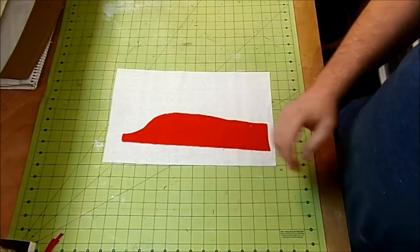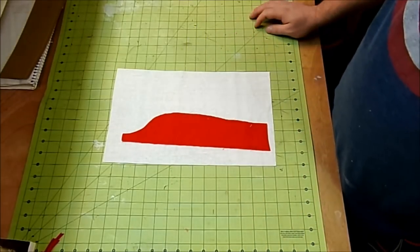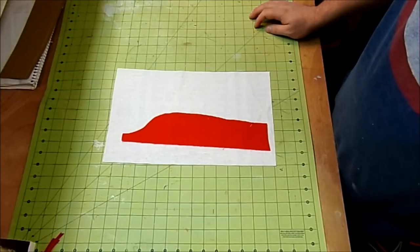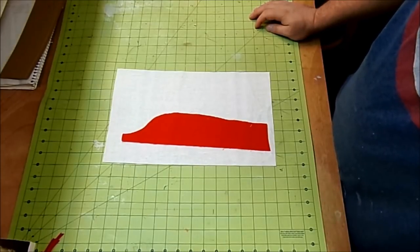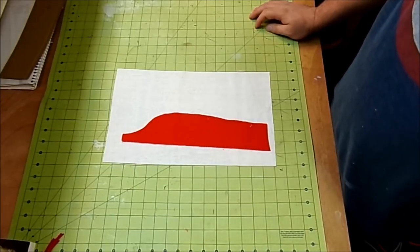Now I got this idea off of Pinterest—I believe it was on a website called Craftomaniac—and she went ahead and just used felt and hot glued it on to her little envelope. But I don't have any red felt today, so I'm just gonna use fabric.